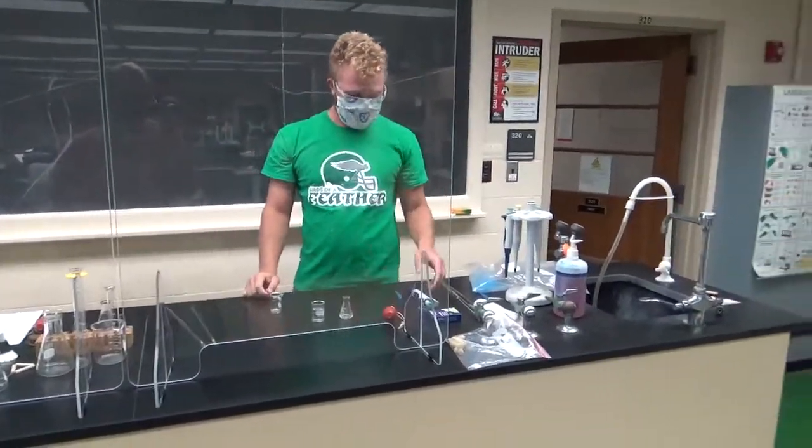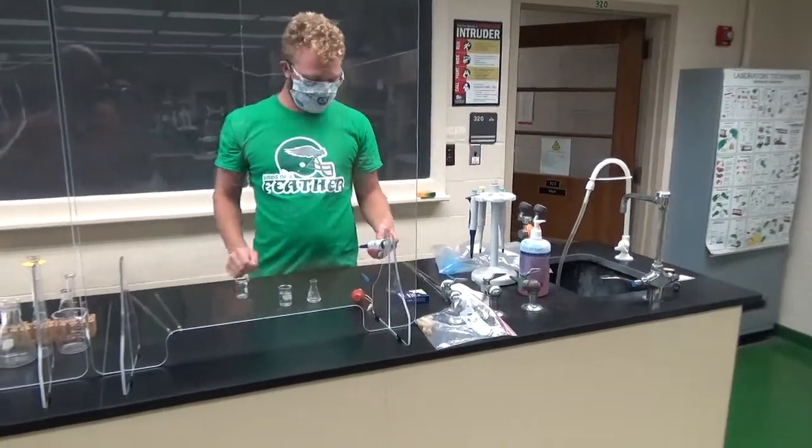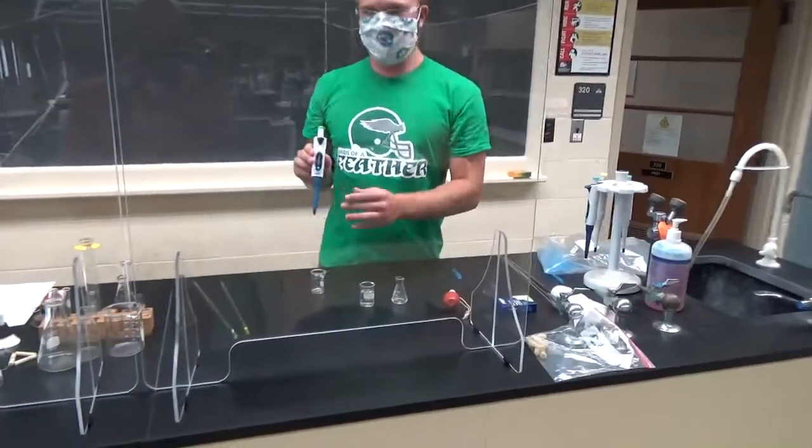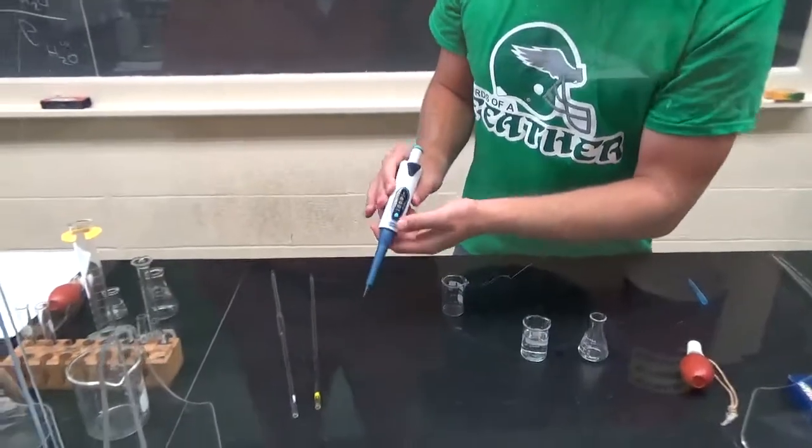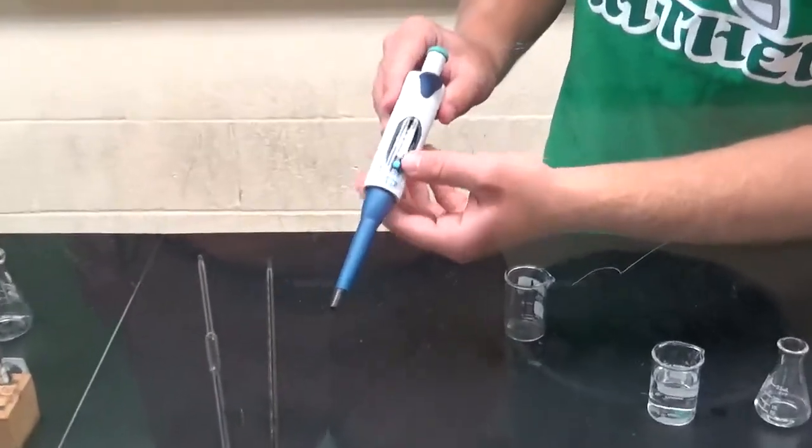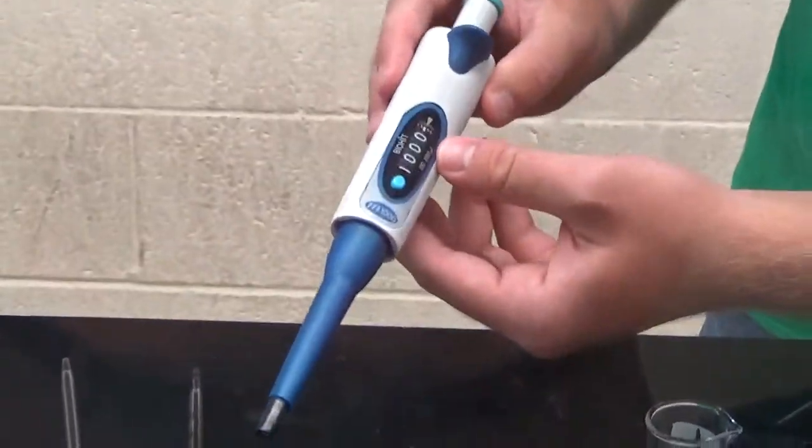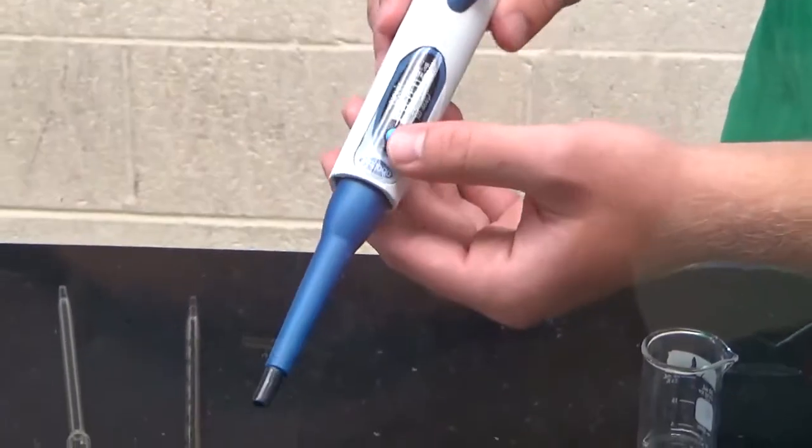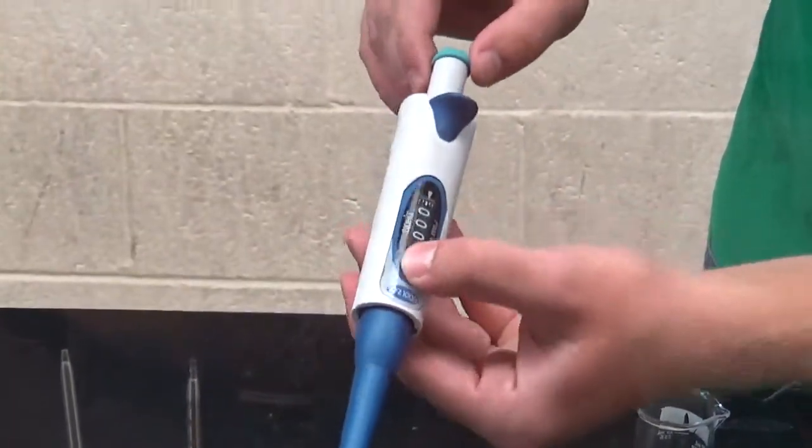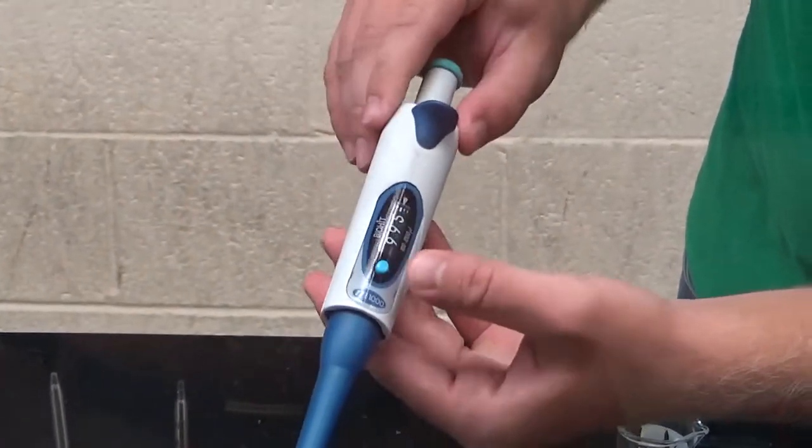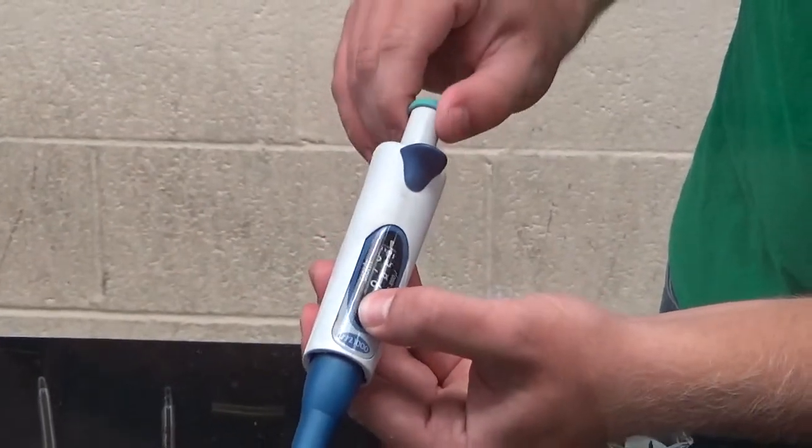Those are two of the three pipettes. The last one, if you've had a biology class, you're probably really familiar with. Here's an automatic pipette. If you're going to change the amount of volume, right now I have a thousand microliters, which is one milliliter. To change that, you press this button and you turn the dial here. Gently.